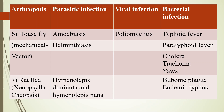Sixth, house fly — which is a mechanical vector transmitting parasitic infections like amoebiasis and helminthiasis, viral infection like poliomyelitis, and bacterial infections like typhoid fever, paratyphoid fever, cholera, trachoma, and yaws.